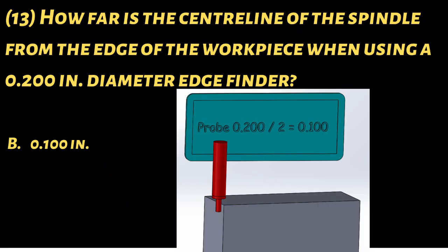If the diameter of your edge finder where you're making contact with your workpiece is 200 thou, therefore you need to find the center line of that diameter, so it would be 200 thou divided by 2 which equals 100 thou.